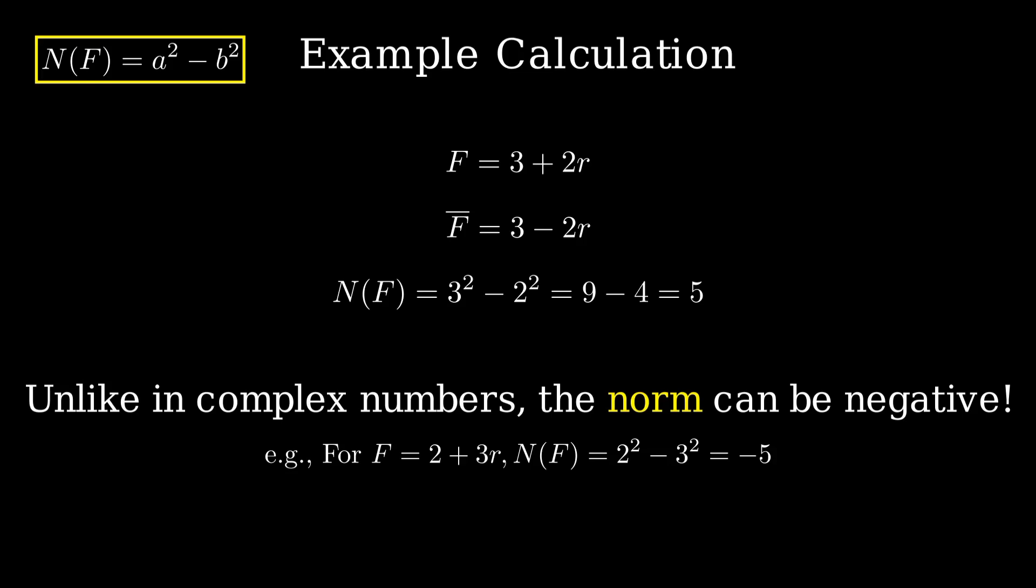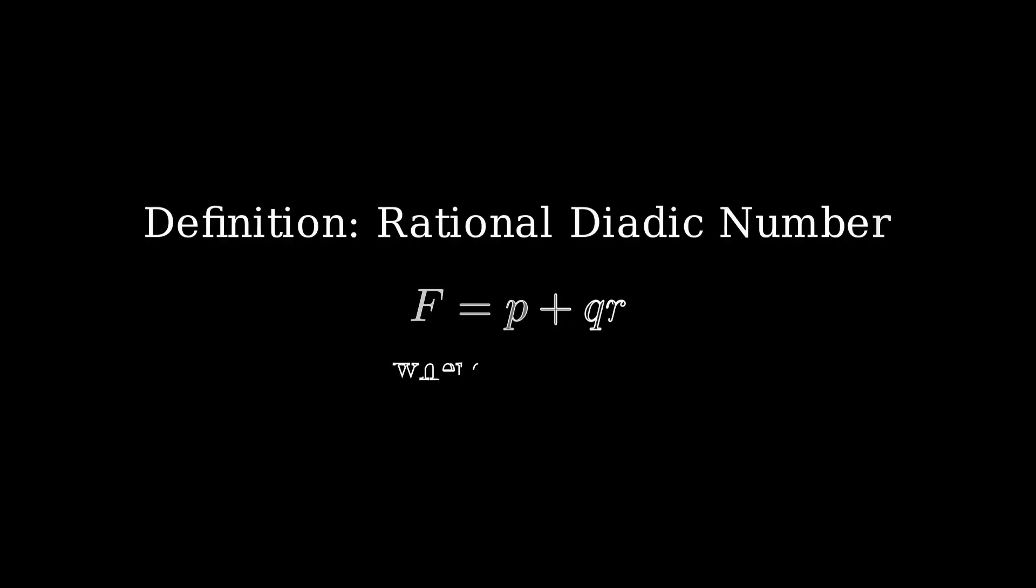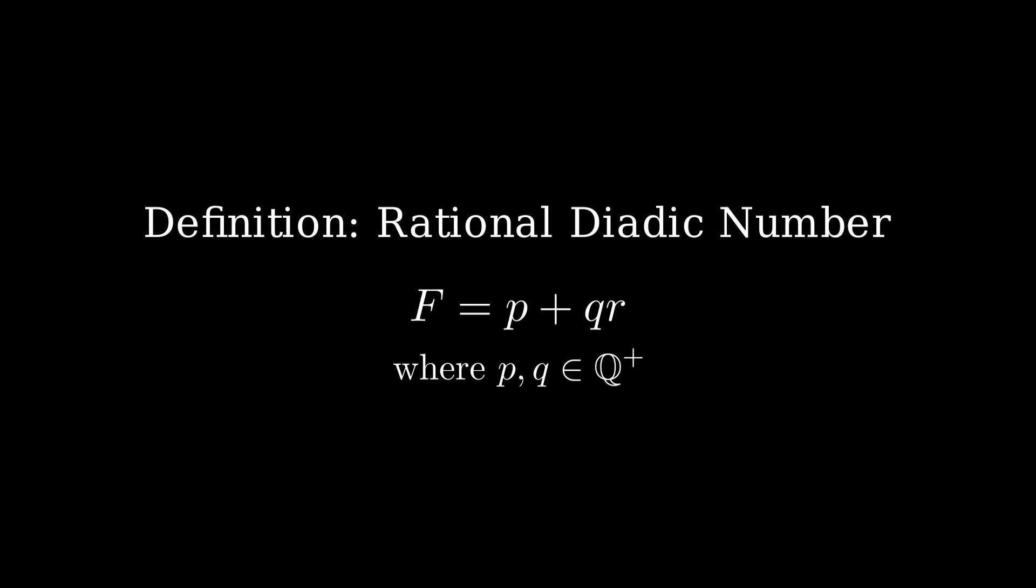Now that we've seen how multiplicative inverses in the dyadic system can introduce fractions, it makes sense to expand our framework. For instance, the inverse of 3 plus r gave us 1 half, a number that clearly isn't a whole number. This leads us to a broader definition. A rational dyadic number is any expression of the form p plus q times r, where both p and q are rational numbers.